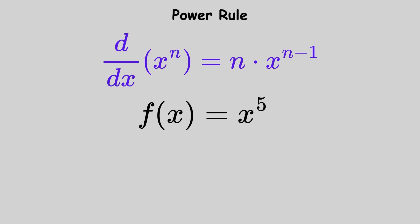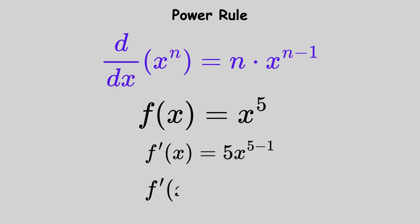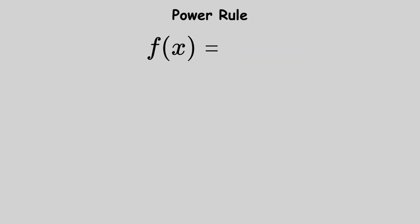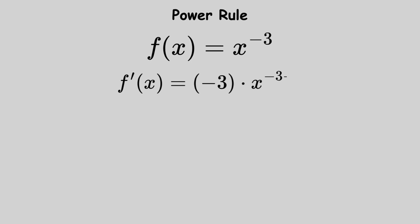For example, if f of x equals x to the power 5, bring down the 5 and subtract 1 from the exponent, so f prime of x equals 5x to the power 4. If f of x equals x to the power negative 3, bring down negative 3 and subtract 1.